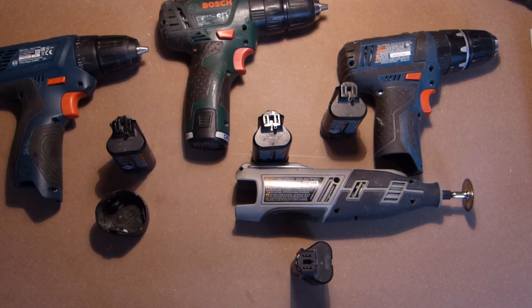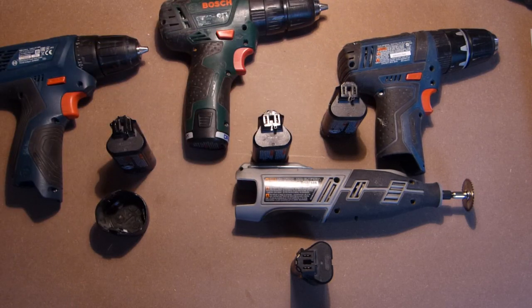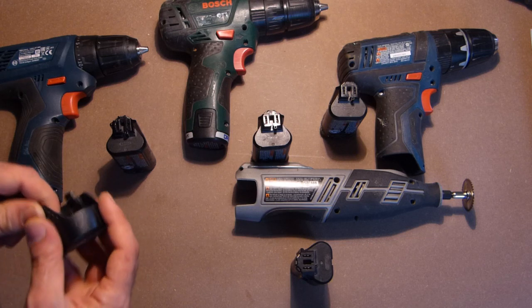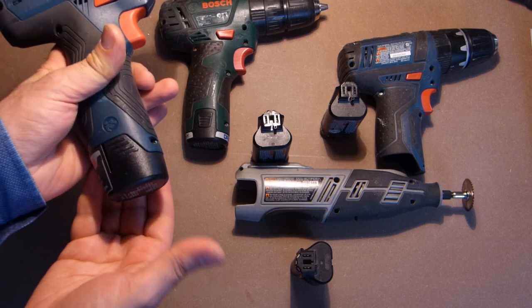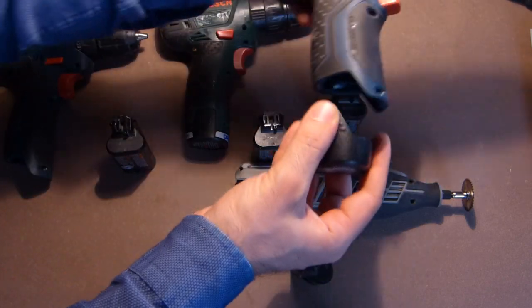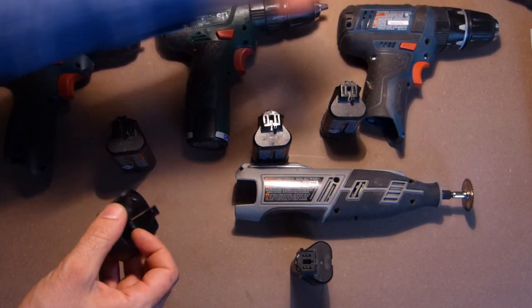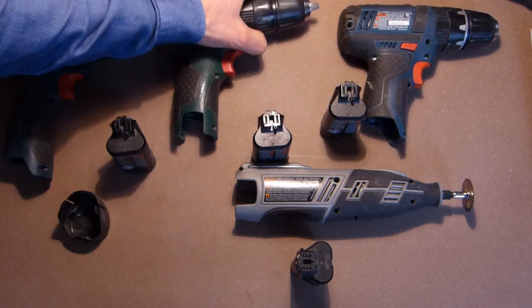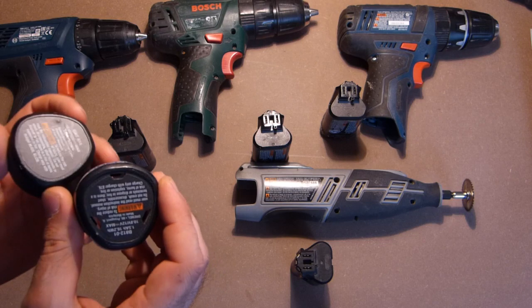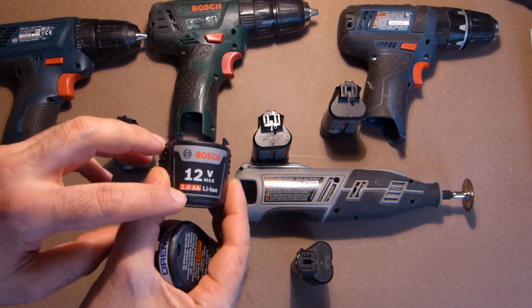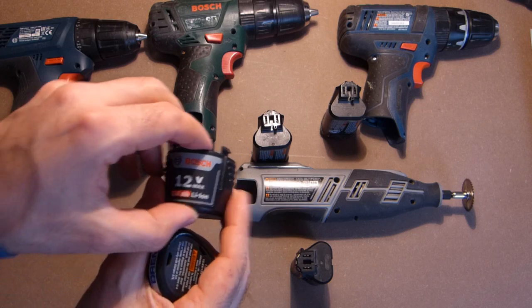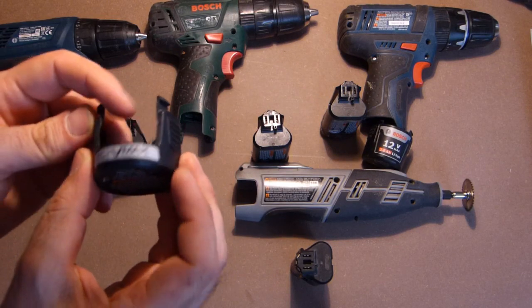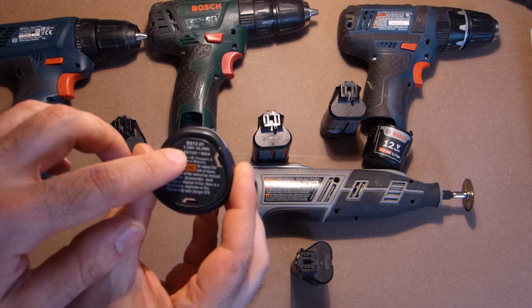And also GSB 10.8 or PS 130 and GSR 120 use the same battery type. The only difference between the batteries for this drill driver and the Dremel is the capacity, so here we have 2Ah and this is the battery exactly of the PS 130, and the Dremel capacity is 1.5Ah.